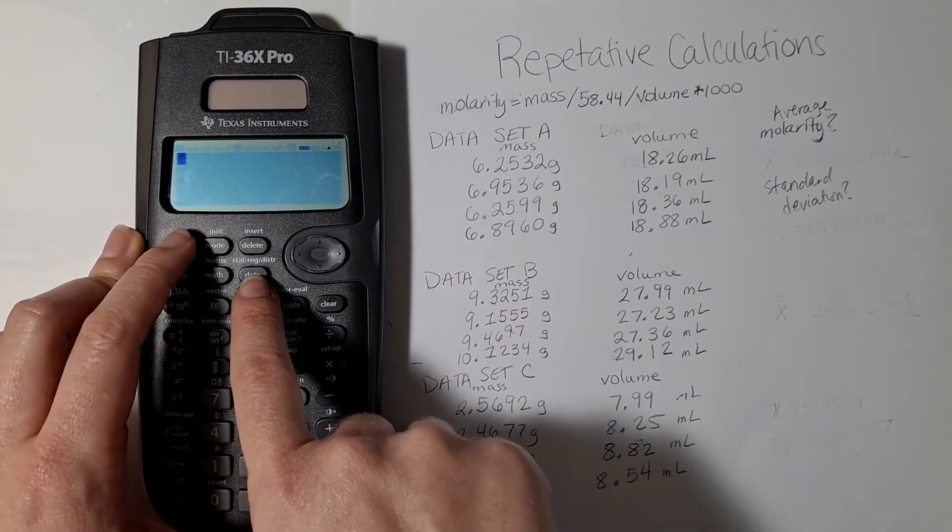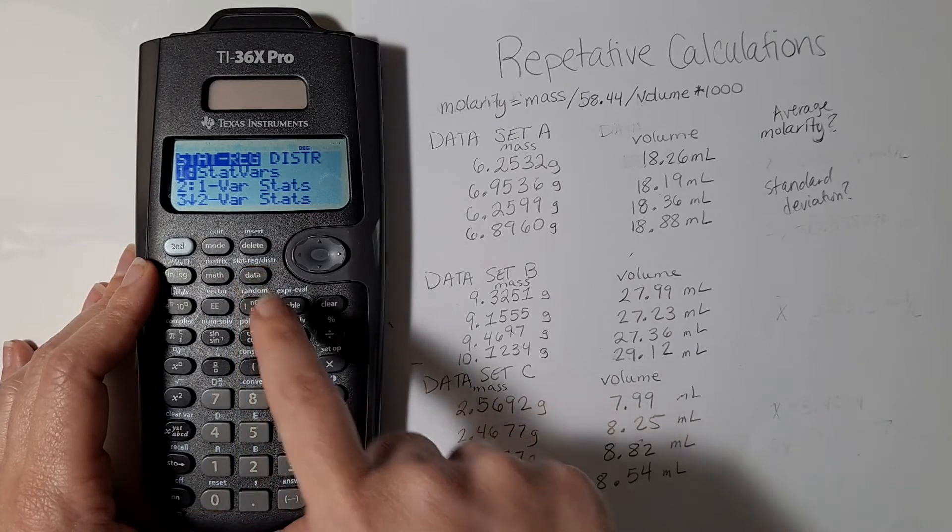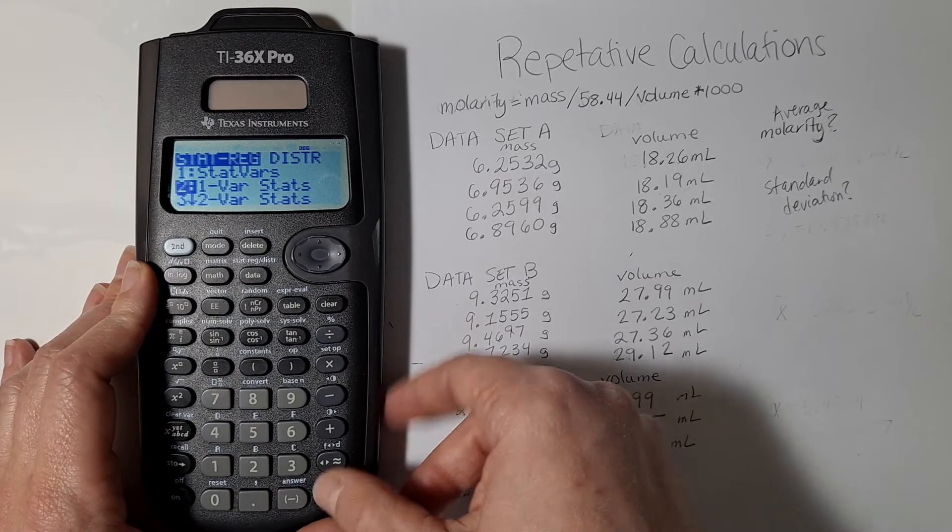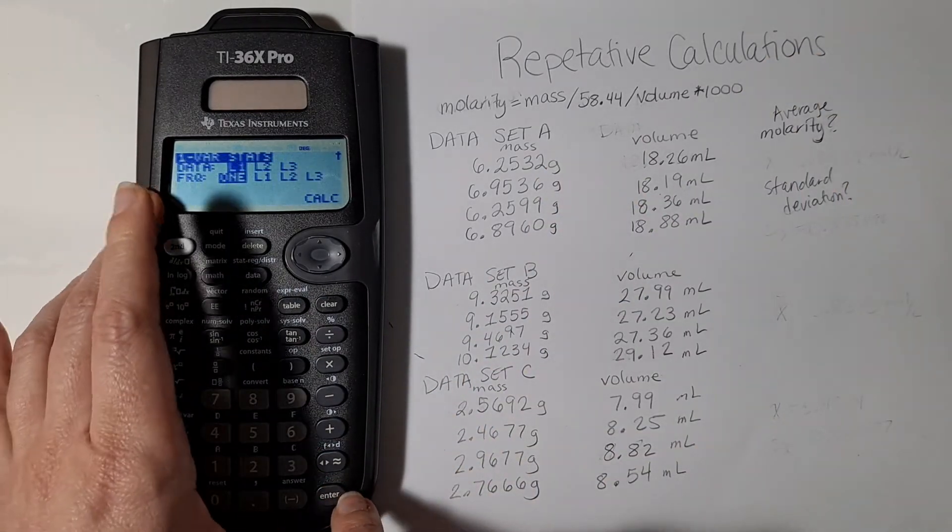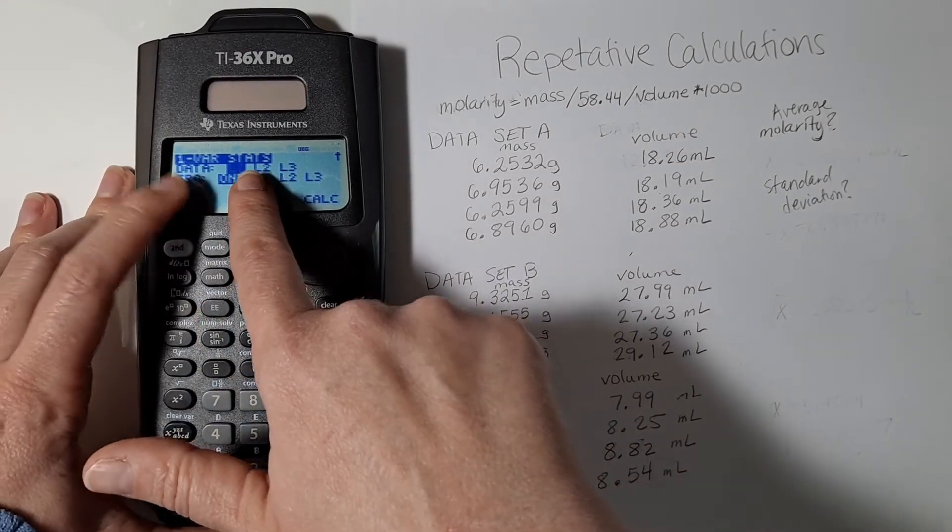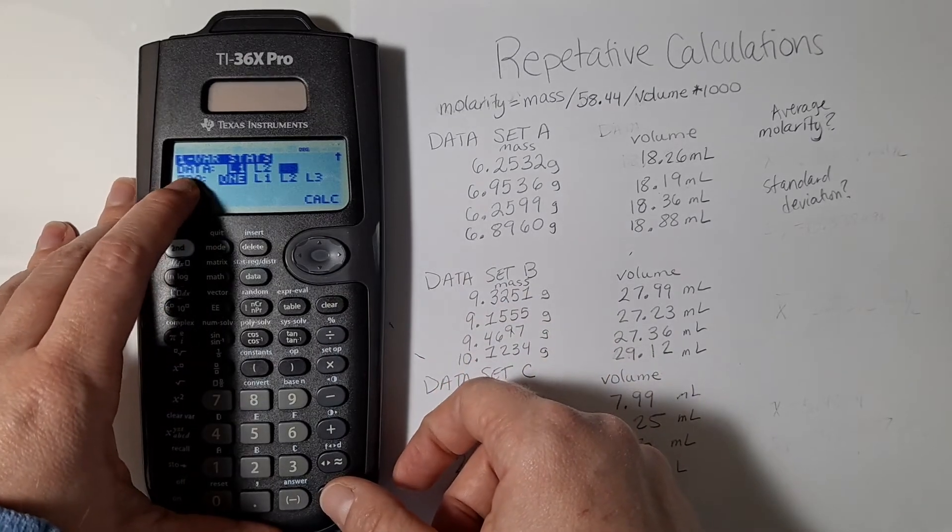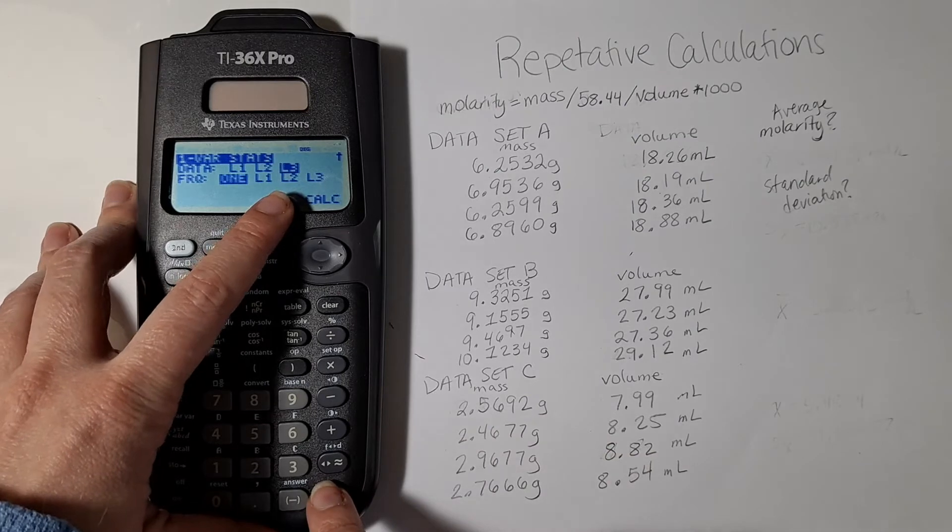Now when I hit second and then data I enter the stat reg distribution menu. I'm going to do one variable statistics because the only column that I need average and standard deviation for is in list 3. I need to tell my calculator that I want average and standard deviation of list 3, and so my data is in list 3. So I scroll over to list 3, hit enter.